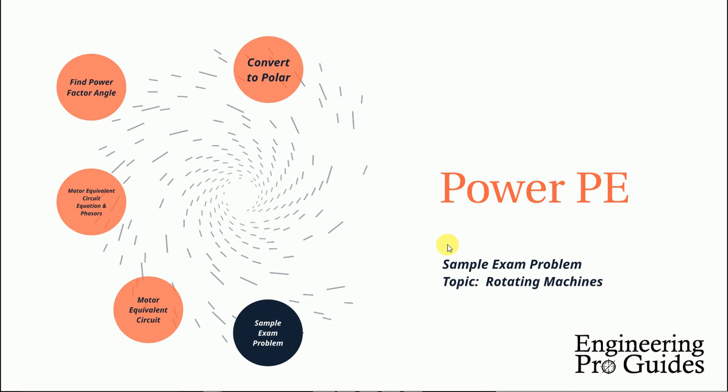In this video, we will cover a sample exam problem for the Power PE exam. This exam problem falls under the topic of rotating machines, which accounts for nearly 10 out of 80 problems on the PE exam.